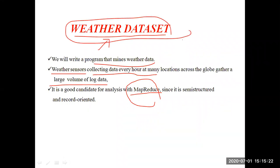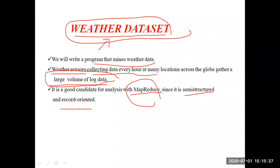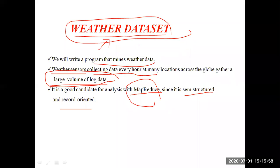Analysis of weather data will become a good example for understanding MapReduce. The reason is that the weather dataset contains large volumes of data. Also, the data in the weather dataset is semi-structured and record-oriented. That is why weather data is the best example for applying analysis using MapReduce. We will first see how this weather data looks before going into the phases of MapReduce.